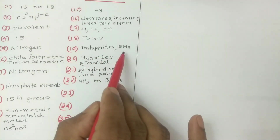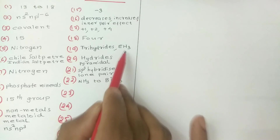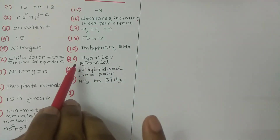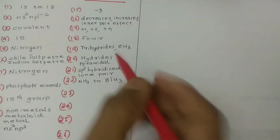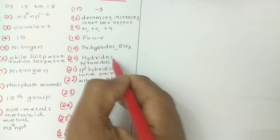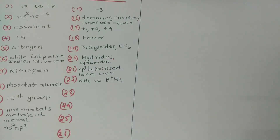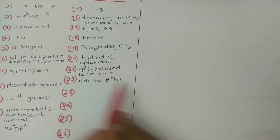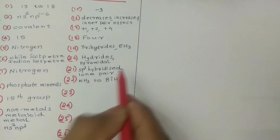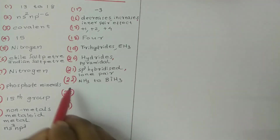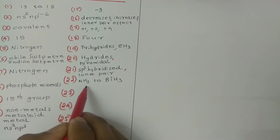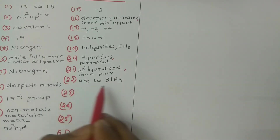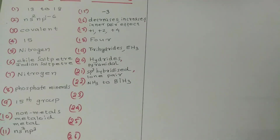Trihydrides. 8 answer — EH₃. 20 — hydrides, pyramidal shape. 2 answer. 21 — 2 answer, SP³ hybridized. 25 answer — lone pair. 22 — NH₃ to BiH₃.